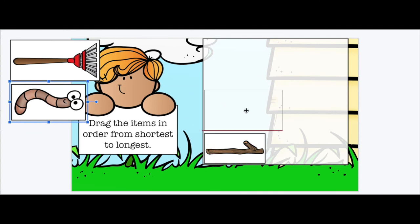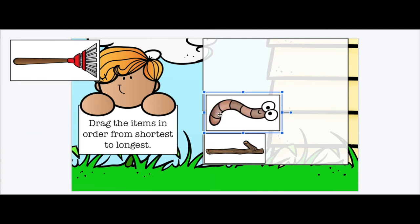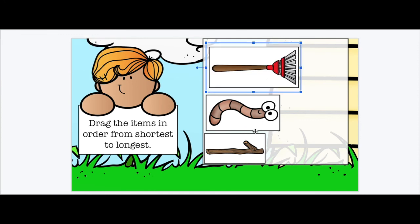Yeah, the worm. The worm goes next. Line it up exactly with the stick. And then the rake is the longest one. So it goes from shortest to longest. Do you see how it kind of makes that incline there? Let's go to the next one.